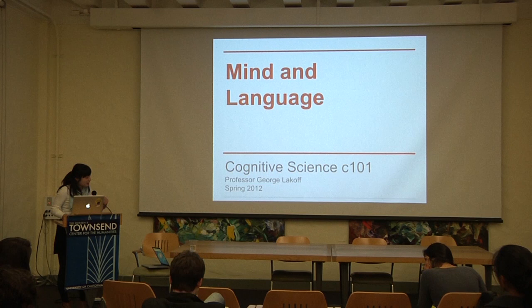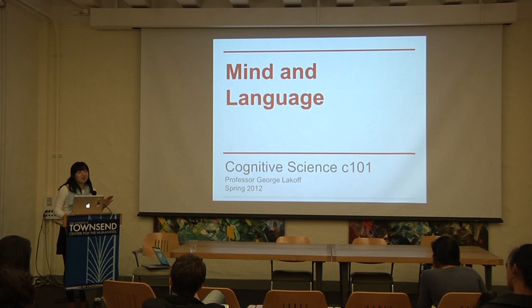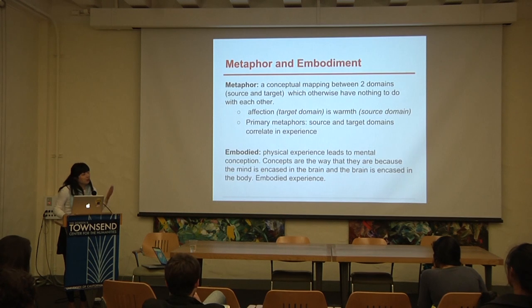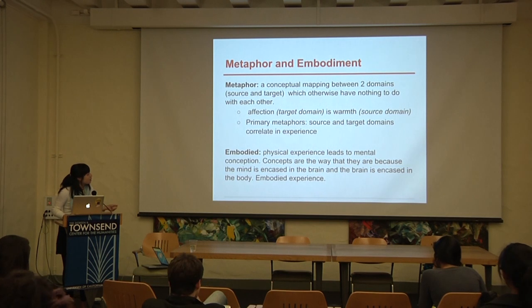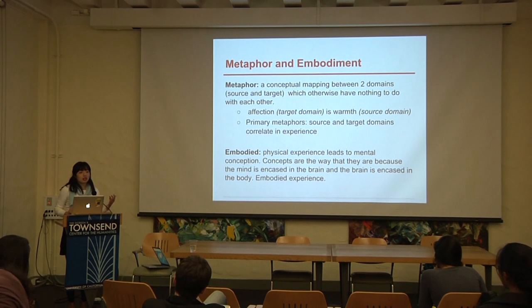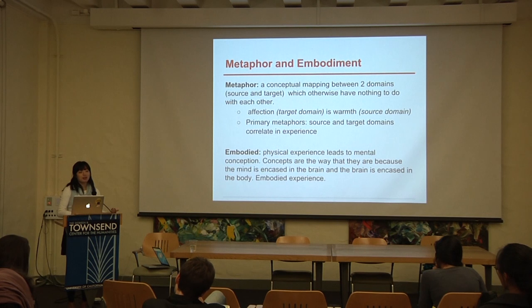Mind and Language was the second class I took, in spring sophomore year. Metaphor and embodiment: a metaphor is a mapping between two concepts to help foster better understanding, like 'affection is warmth.' Primary metaphors correlate an experience and capitalize a lot on embodiment — the sense that what you learn comes through physical experiences. If you know affection is warmth, it's because you were held as a baby and felt the warmth of your mother or father. Some examples: theories are buildings, life is a journey, understanding is grasping — that comes with the metaphor 'ideas are objects,' as in 'that went way over my head.'